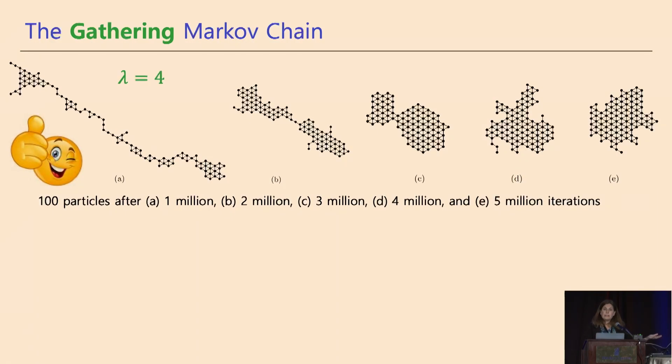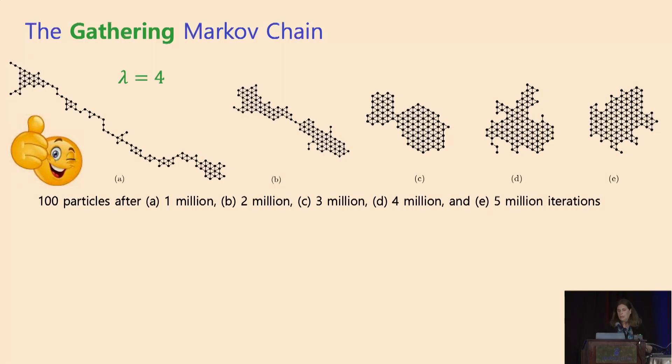And if you run this, you get this kind of gathering, this kind of compression, where you start off with something which has a linear perimeter, and you end up with something which has a square root perimeter, which is close to the minimal possible perimeter. So that's great.